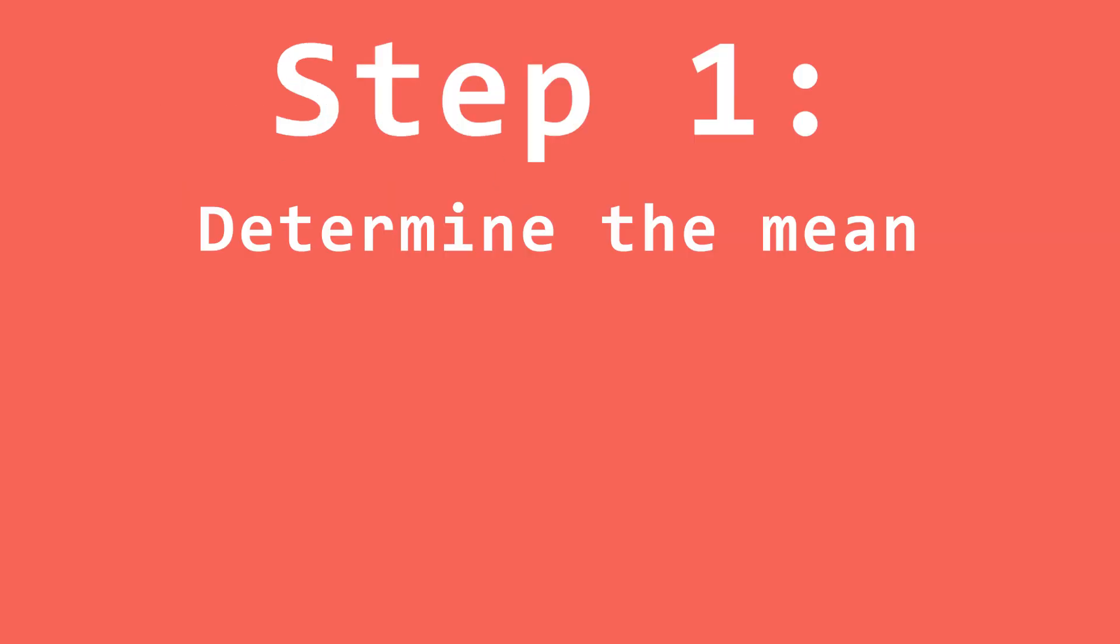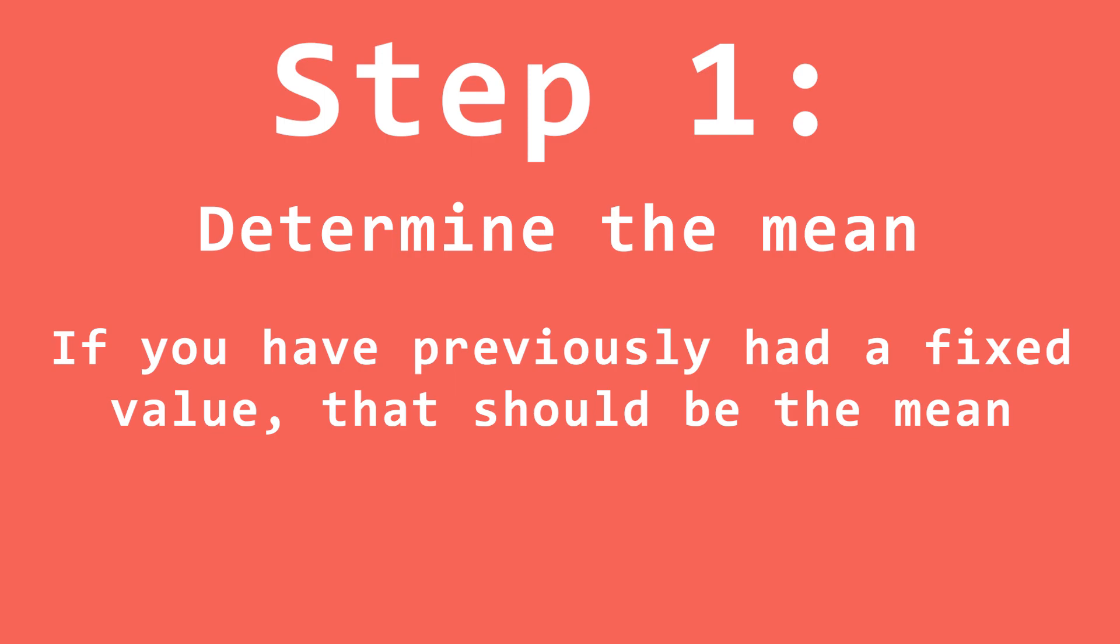The first thing we need to do is determine the mean. For the most part, the mean will be the current value you're already using. So in the case of the enemy, that would be 4 meters per second.